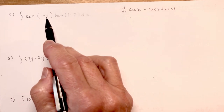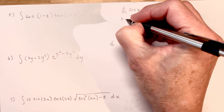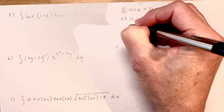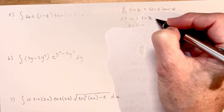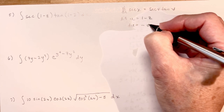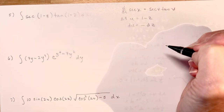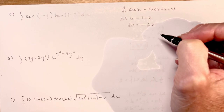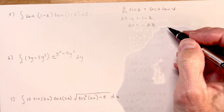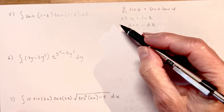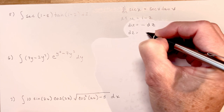So if I let u be equal to 1 minus z, then du is going to equal negative dz, because the derivative of 1 minus z is just negative 1. So that means dz is equal to negative du.